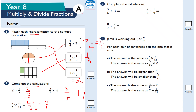Question number 3: complete the calculations — some dividing fractions now. Dividing by 3 is the same as multiplying by a third. So you keep the first fraction, flip the second fraction — 3 goes to 1 third — and then change the division to a multiplication. 3 times 1 is 3, and 3 times 5 is 15, so I get 3 fifteenths, which simplifies to 1 fifth.